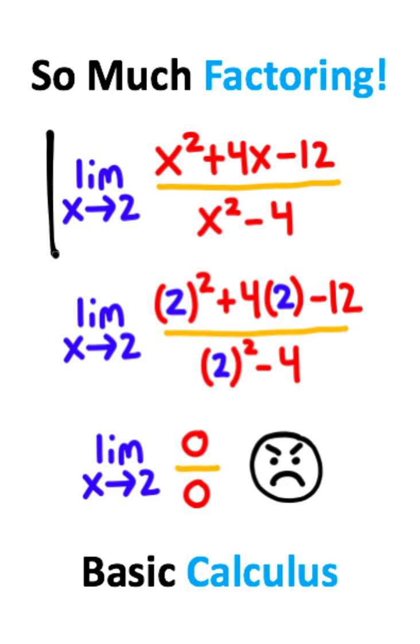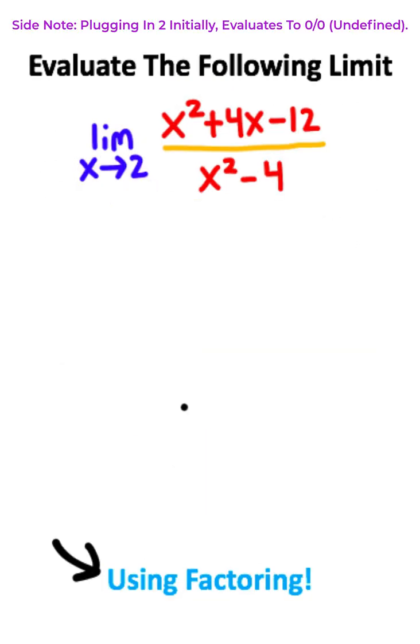In this calculus problem we are given a limit as x approaches 2. Now if I want to use factoring, the first thing that I notice is this quadratic polynomial in the numerator of the fraction.